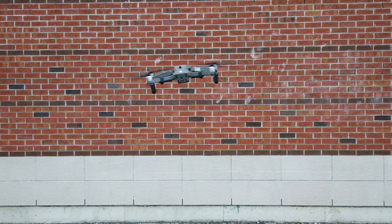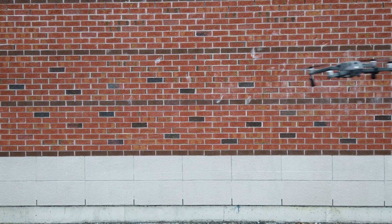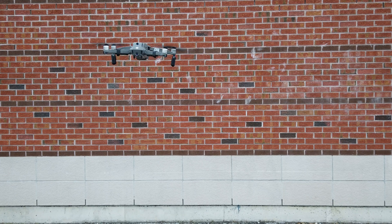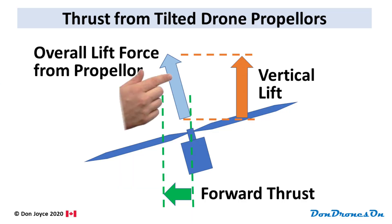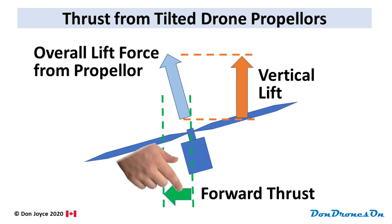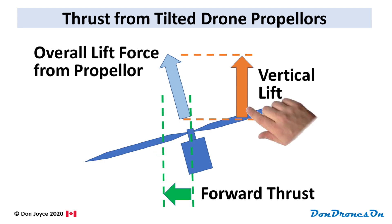Horizontal motion is achieved by tilting the drone in the desired direction. If you tilt the drone to the left, the drone will move to the left. When you tilt the drone, part of the lift force from the propellers is applied to the horizontal plane, and this thrust moves the craft in the opposite direction. The props will also need to go a bit faster to ensure there is still enough force in the vertical direction to maintain altitude.